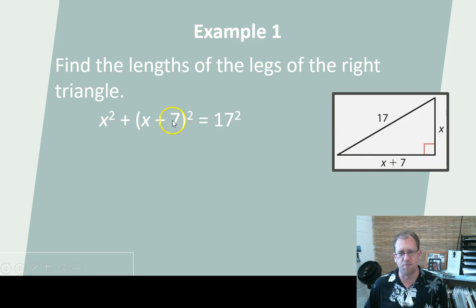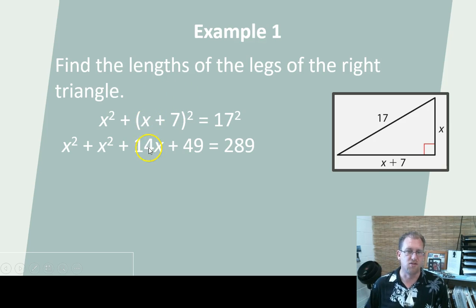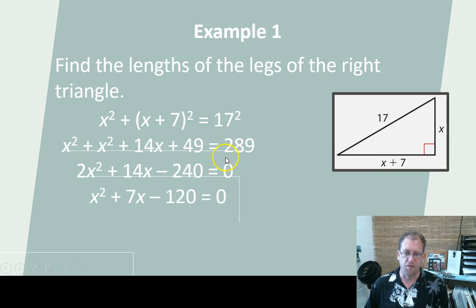So X squared plus X plus seven squared equals 17 squared. You have to FOIL this out, right? So first, outer, inner, last. It becomes X squared. Here's this one. And then X times X is another X squared. X times seven is seven X. And then seven times X is another seven X. So that makes 14X. And then seven times seven is 49. So they didn't show you the FOIL in here, but you've done FOIL enough, hopefully, that you followed that. And that equals 17 squared, which is 289. Now we need to combine like terms. I have two X squareds. I've got the 14X. I've got the 49. And I want this to all equal zero. So I'm going to set this equal to zero here by moving the 289 over. It becomes negative 240 equals zero.